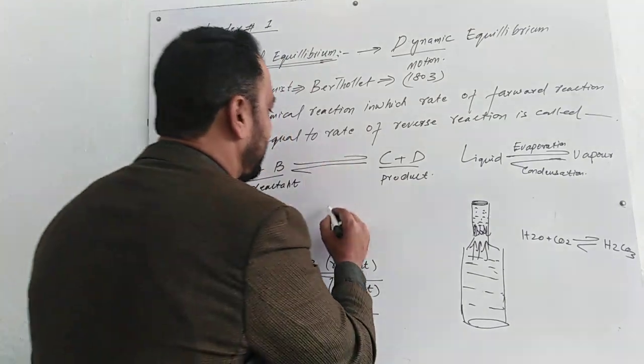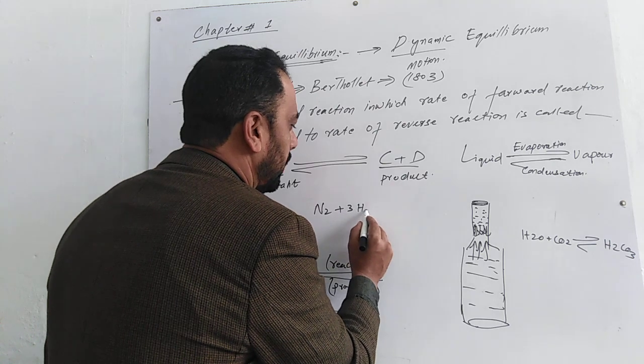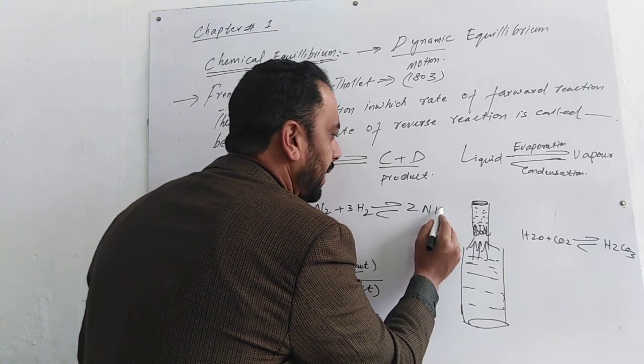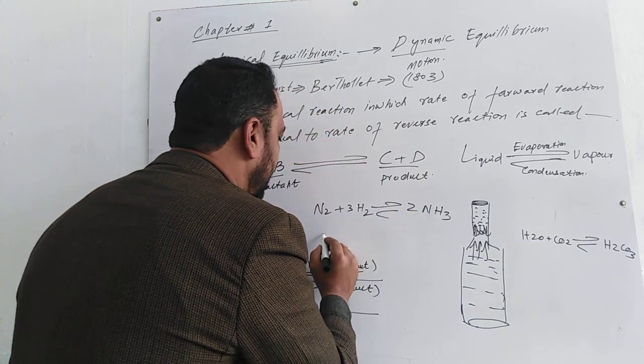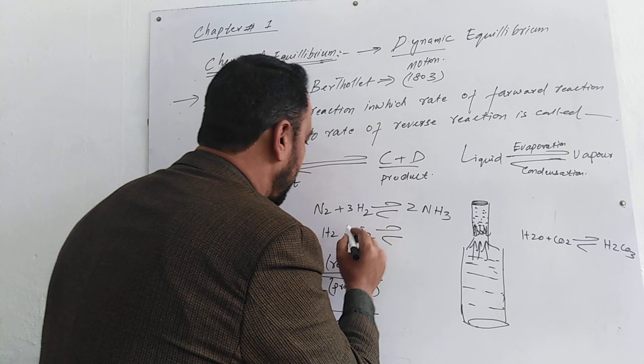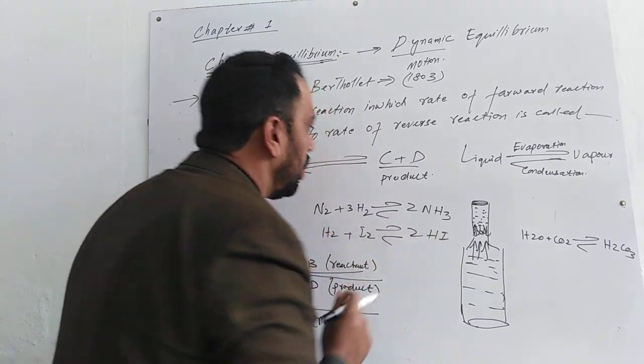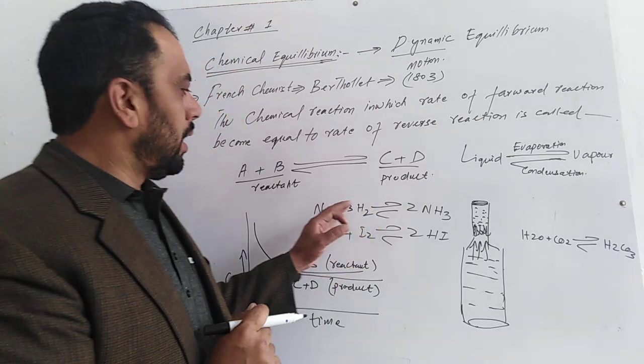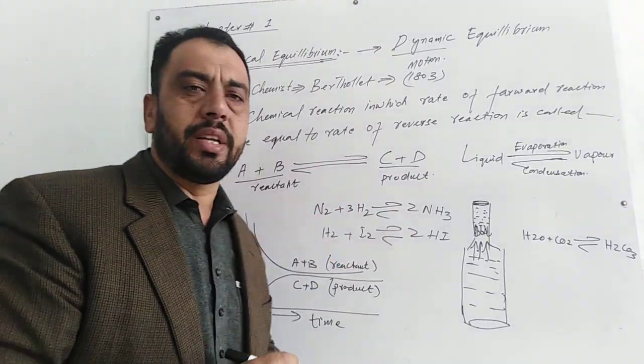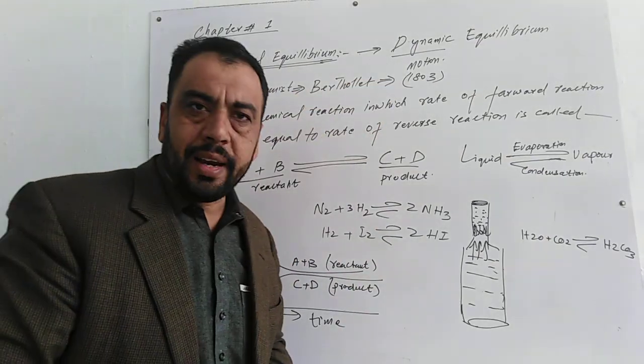A number of reactions we have: N2 plus 3H2 forms ammonia, becoming 2NH3. Or H2 plus I2 in a reversible reaction forms 2HI. So when rate of forward reaction becomes equal to rate of reverse reaction, we call it chemical equilibrium or dynamic equilibrium.